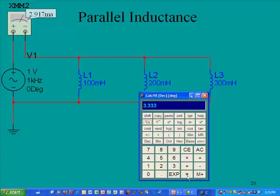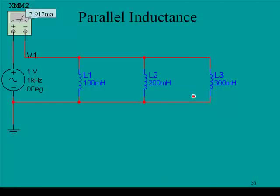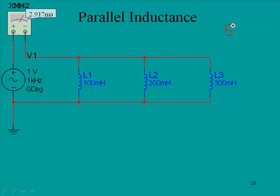That equals 18.33, and then we'll do the 1 over function, and here we have the inductance. This is the parallel inductance. Notice the parallel inductance is less than the smallest component. We have 54.5 millihenries.